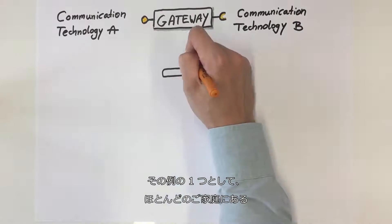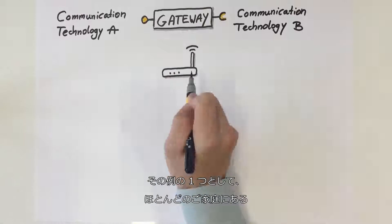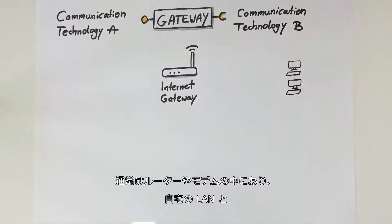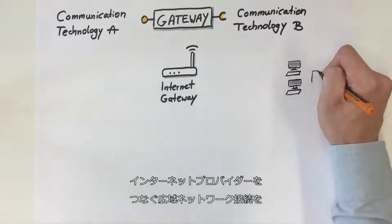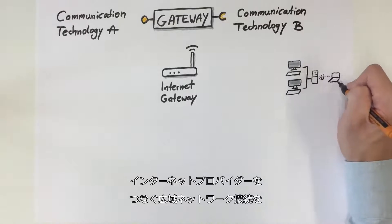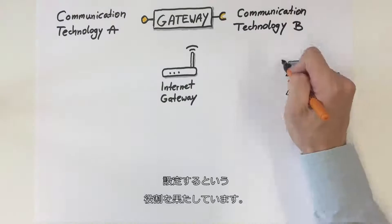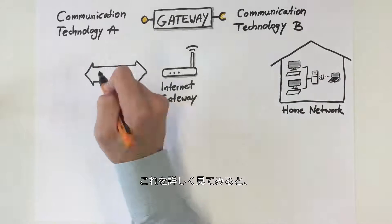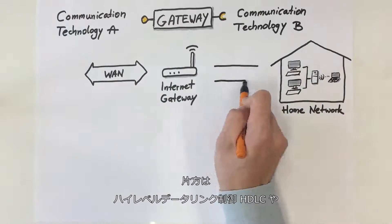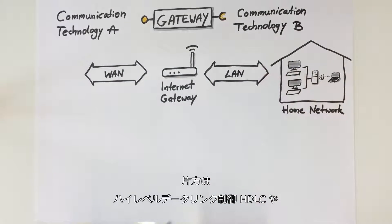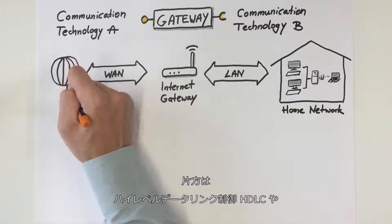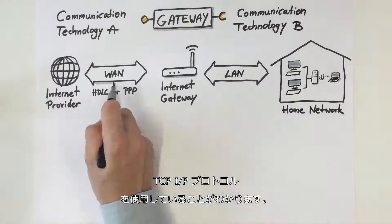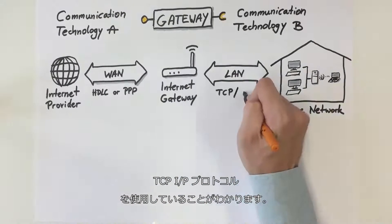One example to illustrate this is the Internet gateway most of us have at home. Usually located inside a router or a modem, this sets up a wide area network connection to connect your home, a local area network, with your Internet provider. Looking closer at this, we can identify the high-level data link control HDLC or point-to-point protocol PPP used on the one side, and the TCP Internet protocol on the other.